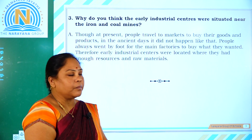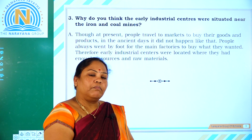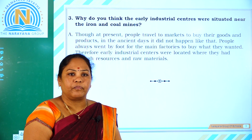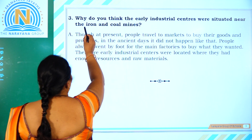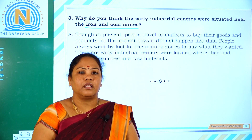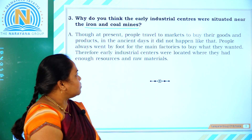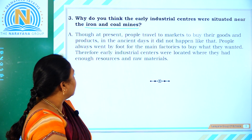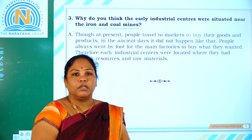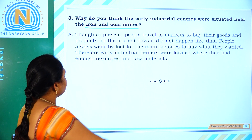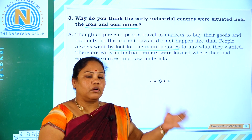Let us move on with question number 3: why do you think the early industrial centers were situated near the iron and coal mines? Why were industries situated near the mines where the two minerals, iron and coal, were available? Though at present people travel to markets to buy goods, in ancient days it did not happen like that. People always went on foot directly to the main factories to buy what they wanted.